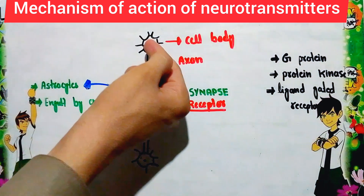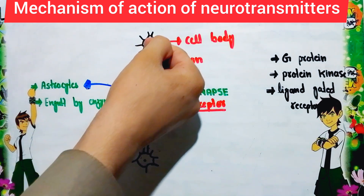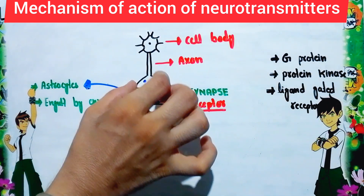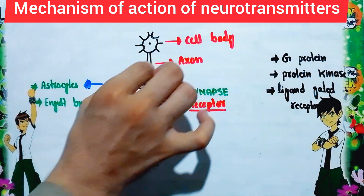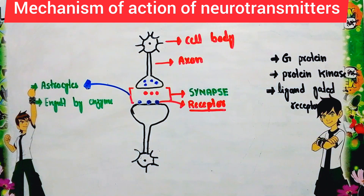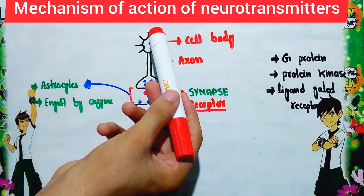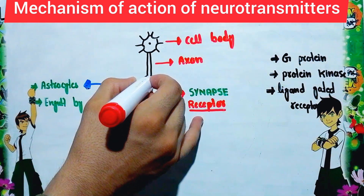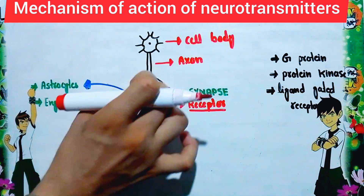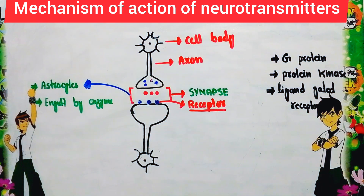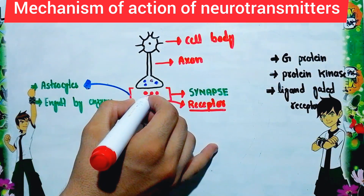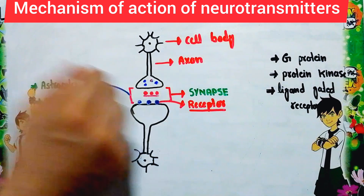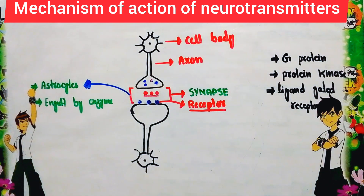The neurotransmitter is synthesized in the cell body and then moves through the axon into the axon terminal, where it is packed into structures called vesicles. When the nerve impulse arrives at the axon terminal, it causes the vesicle to release the neurotransmitter into the synaptic cleft.